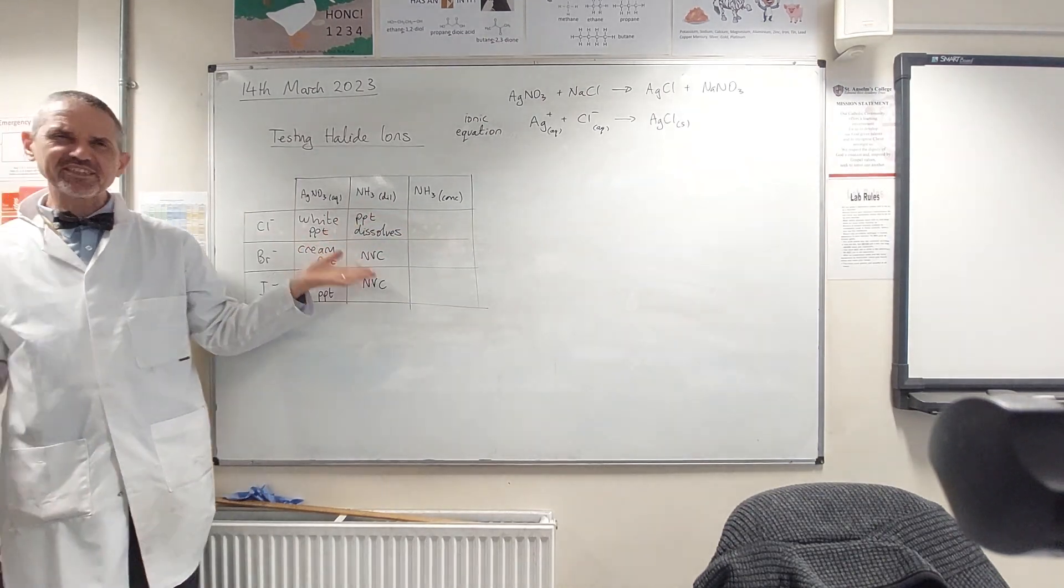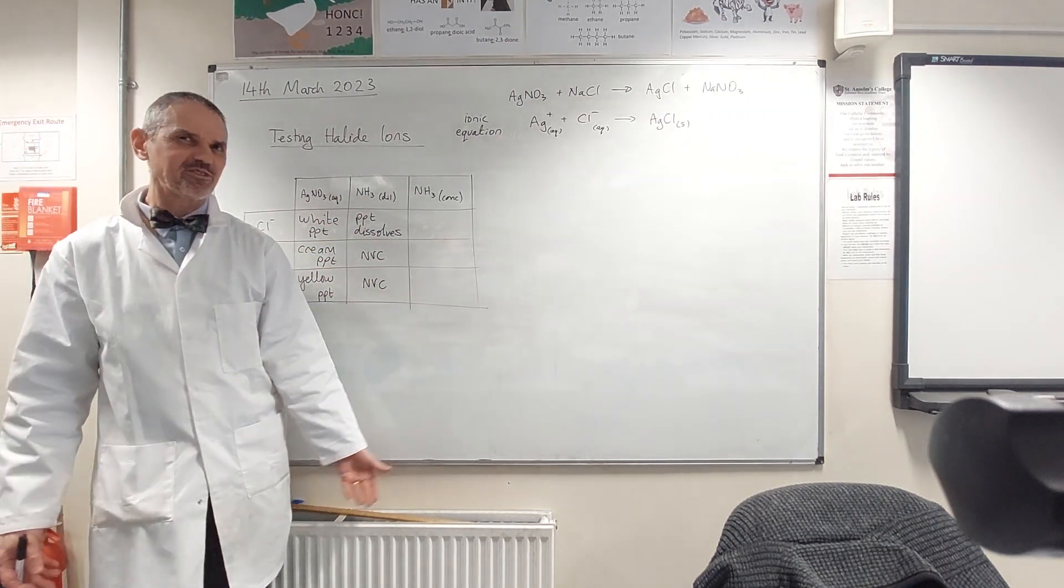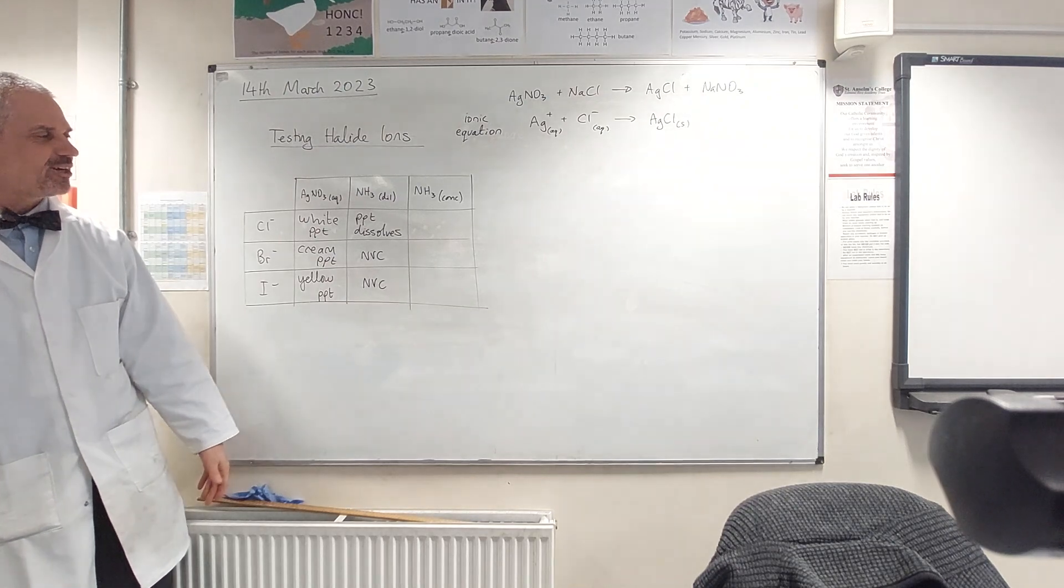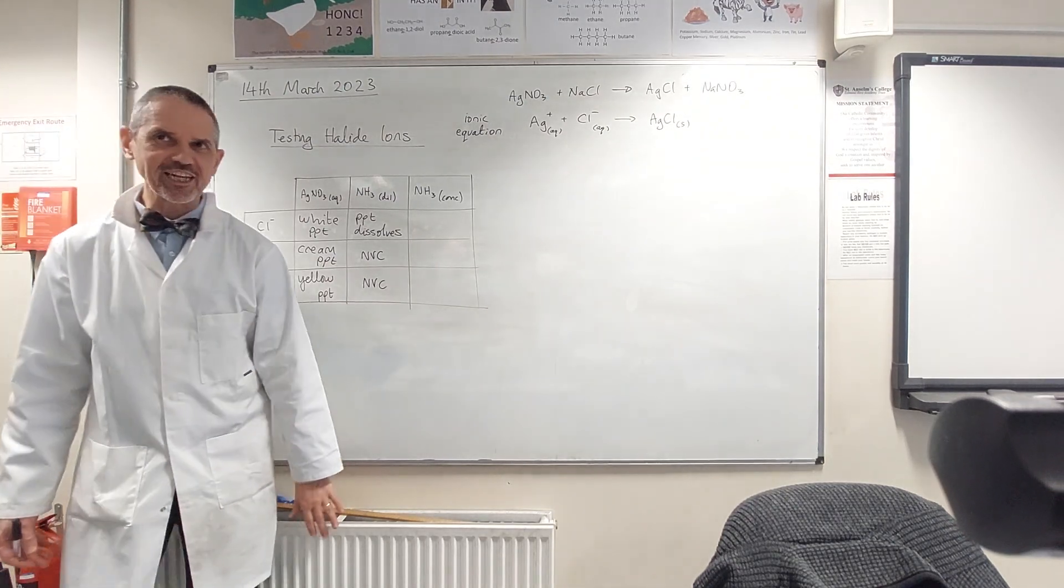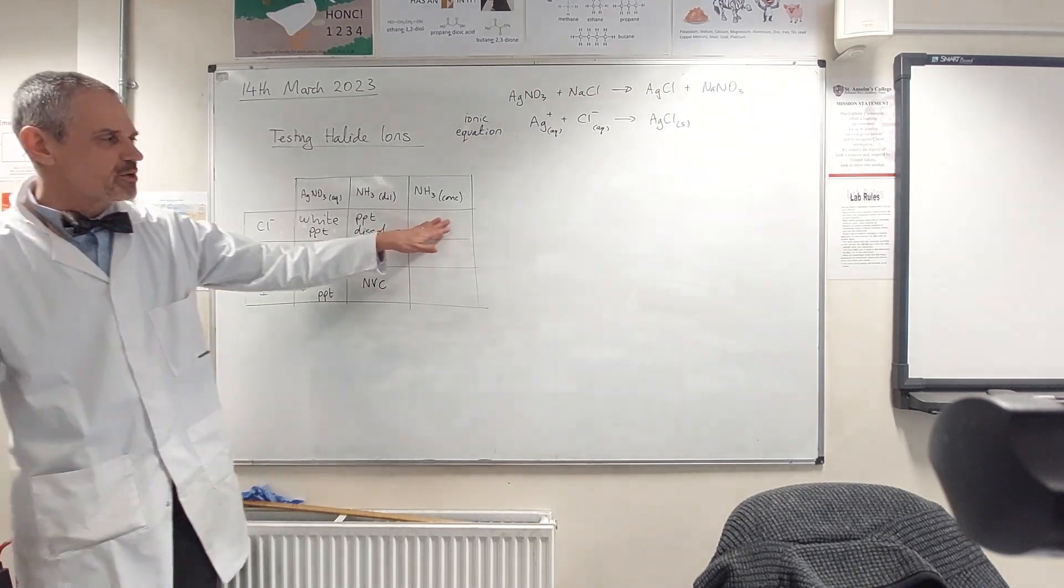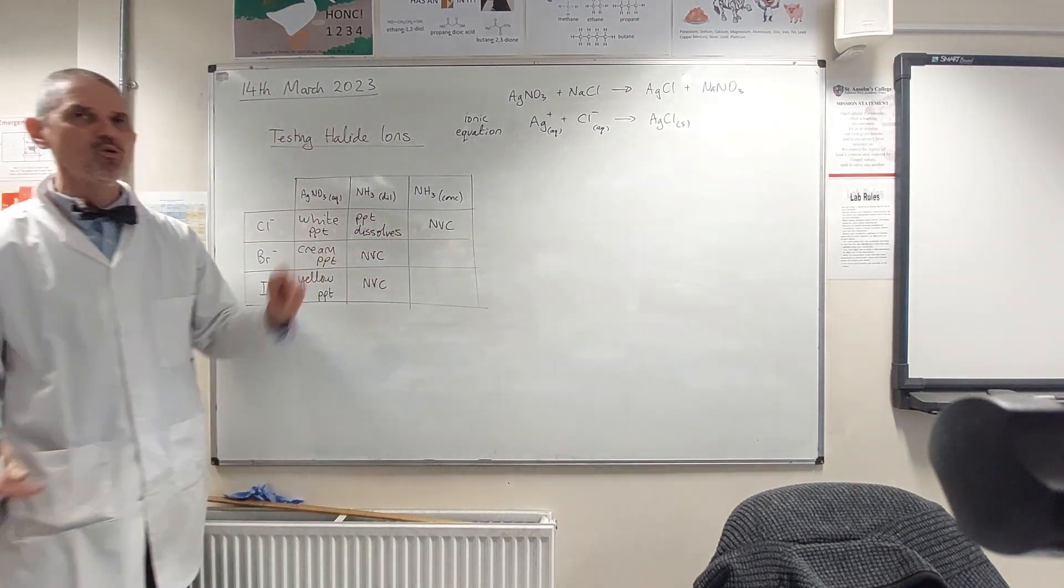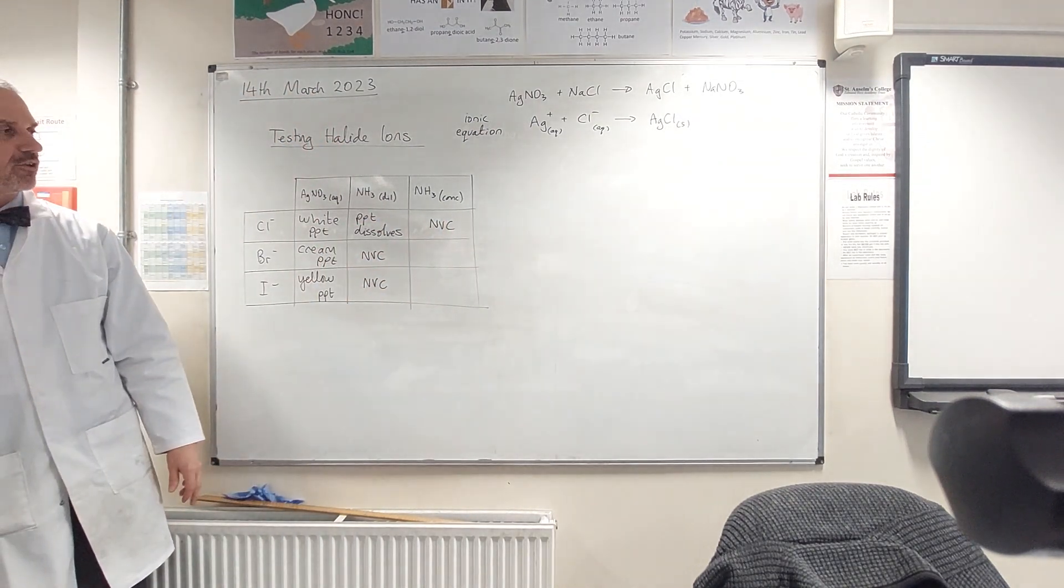Well, our precipitate's already kind of dissolved for chloride, so it'll either dissolve some more if there was a bit left, or we won't see any change, or it stays clear and colourless. Depends what you want to write there. I'm just going to write no visible change because I'm going to assume that all my precipitate is already dissolved.